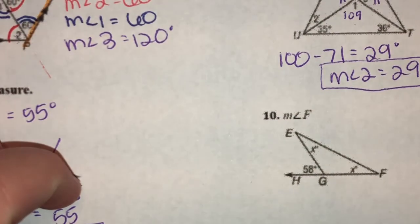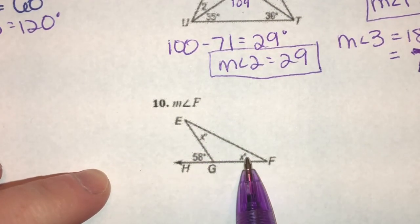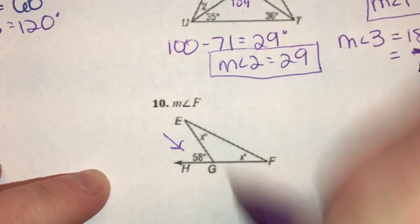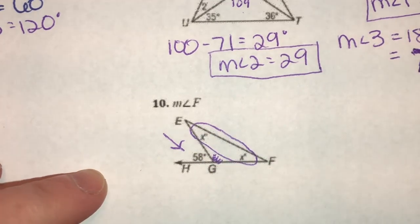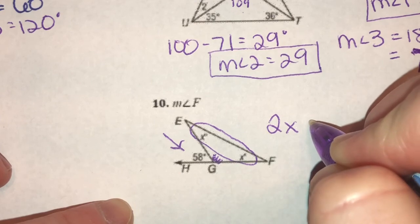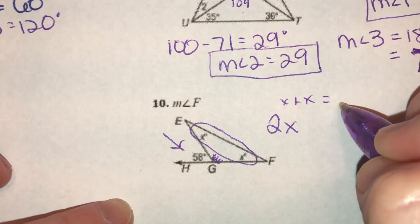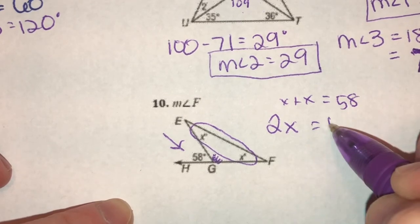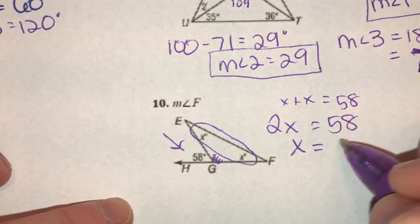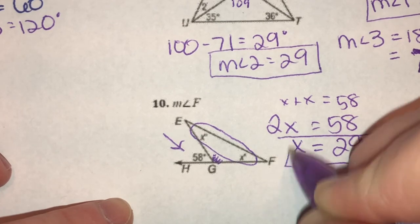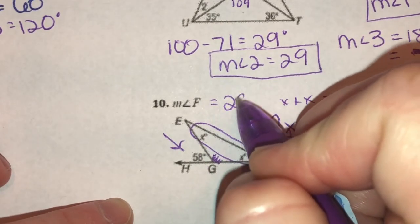Number ten, the measure of angle F. These two angles are remote interior to this exterior angle — they're both x, so x plus x equals 58 degrees. In other words, 2x equals 58, so x equals 29. Each of these angles is 29 degrees, which means angle F is 29 degrees.